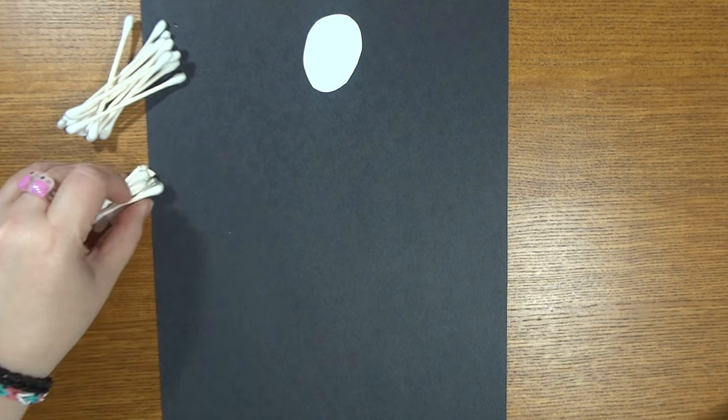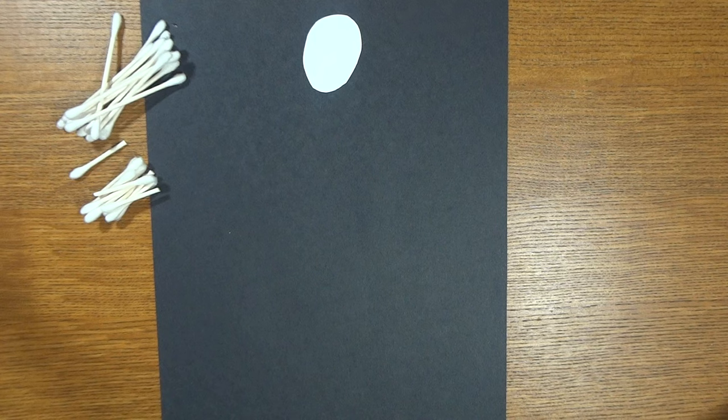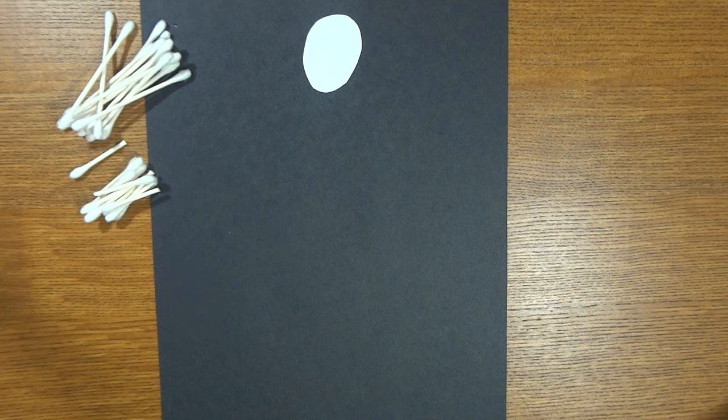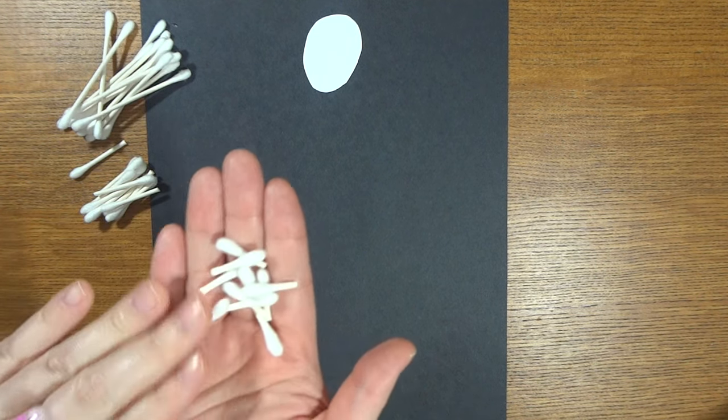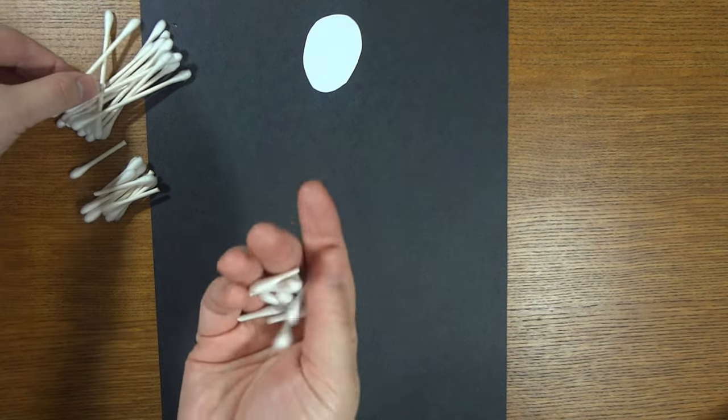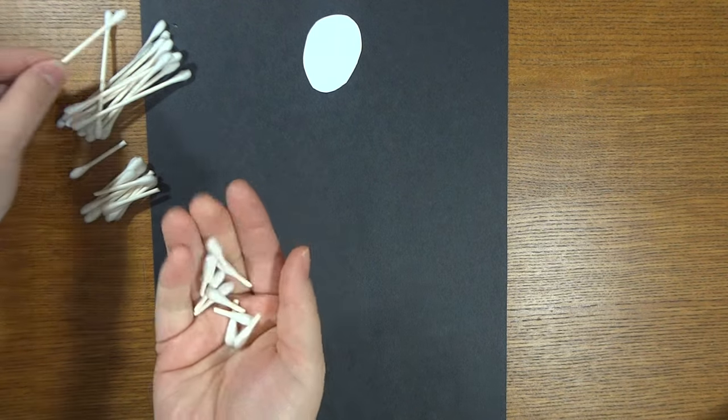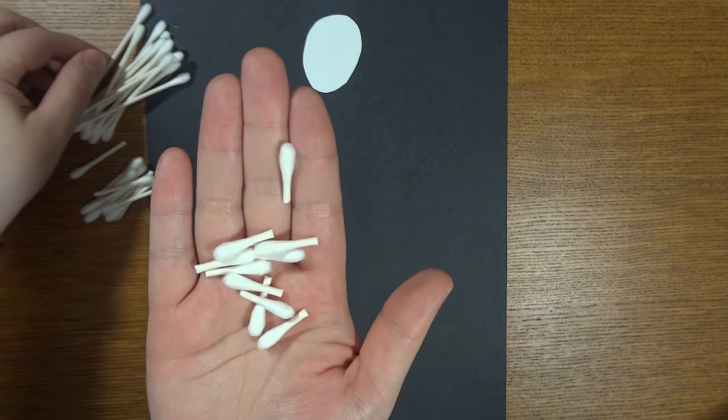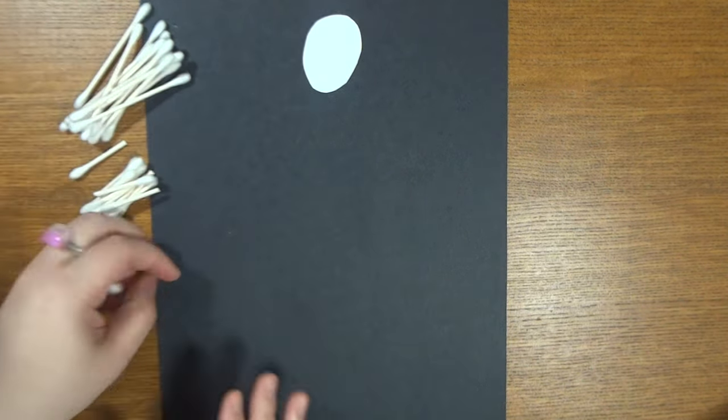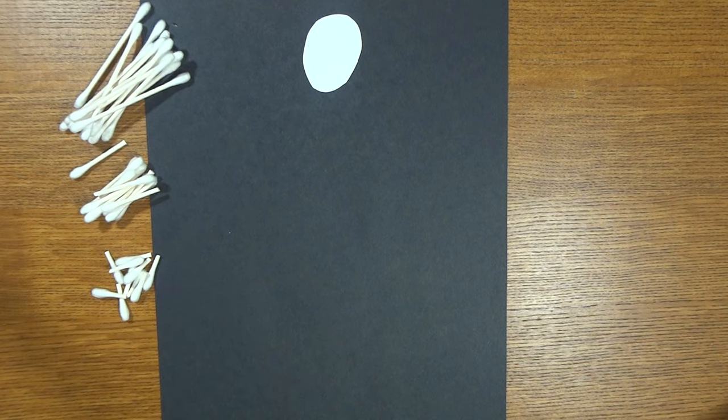Finally, you're going to need five more pieces, and you're going to cut those into really small pieces. Take your cotton swab and cut it just a little bit below where the cotton ends. You're going to end up with 10 of these smaller pieces. We're going to go ahead and start designing our skeleton before we glue anything down.